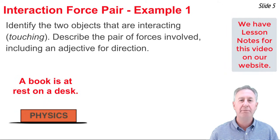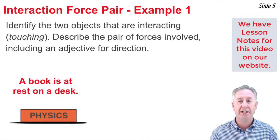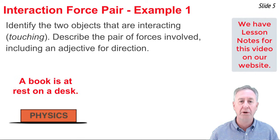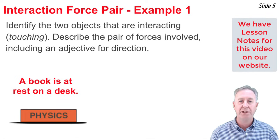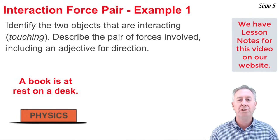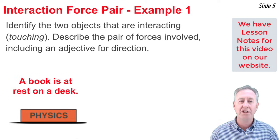This is the first of several examples in which we will identify the interaction force pairs between two contacting objects. The procedure involves first identifying the two objects that are contacting each other, and then describing the push or pull that acts on each of the objects independently. When you do, use an adjective to describe the direction.